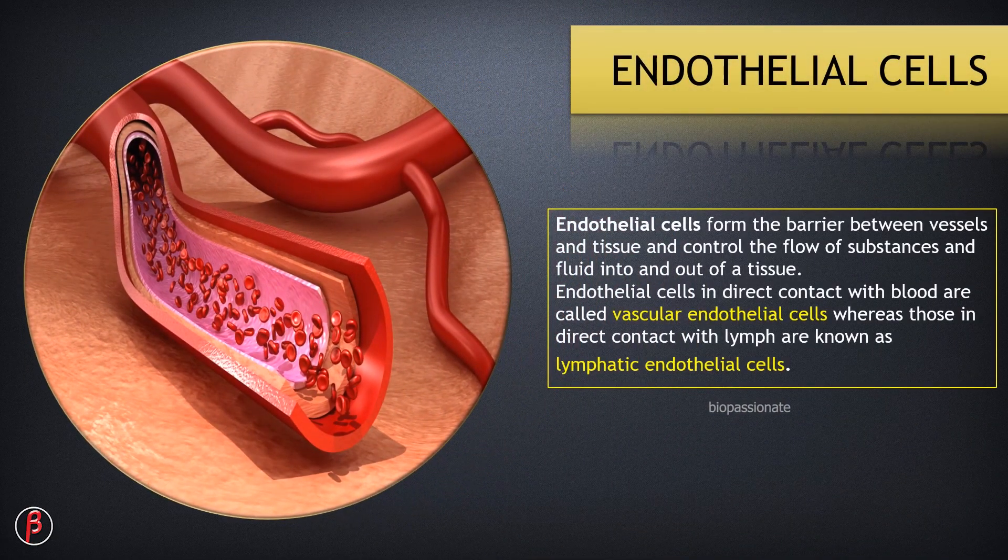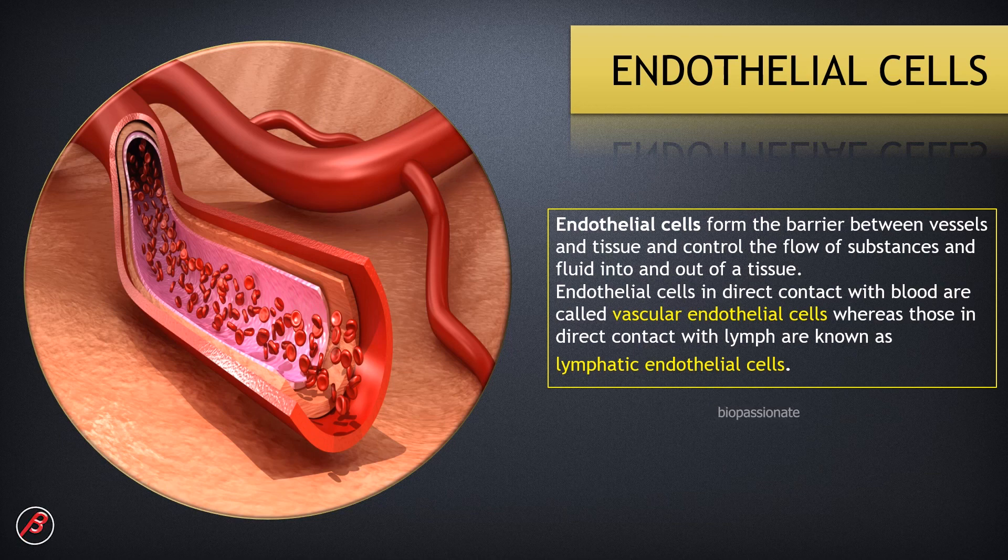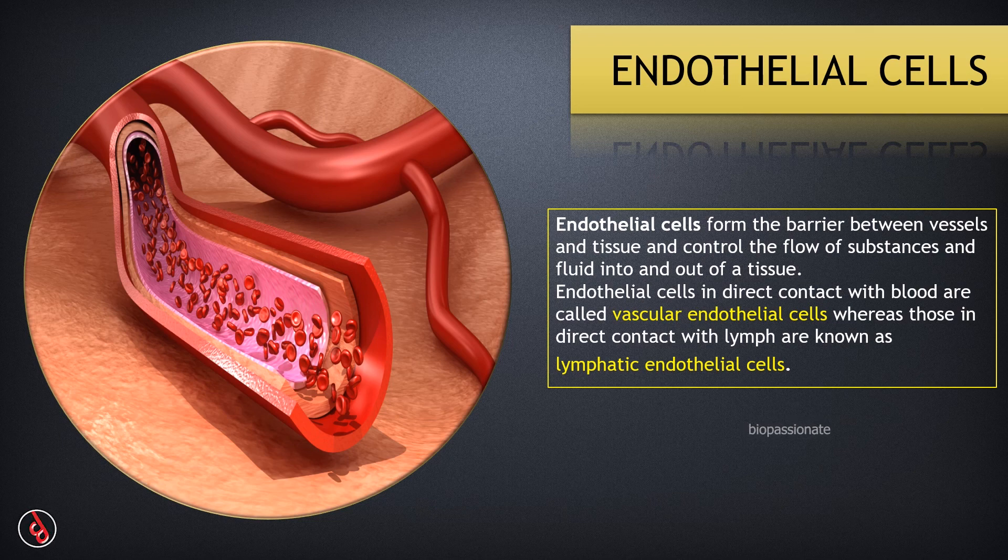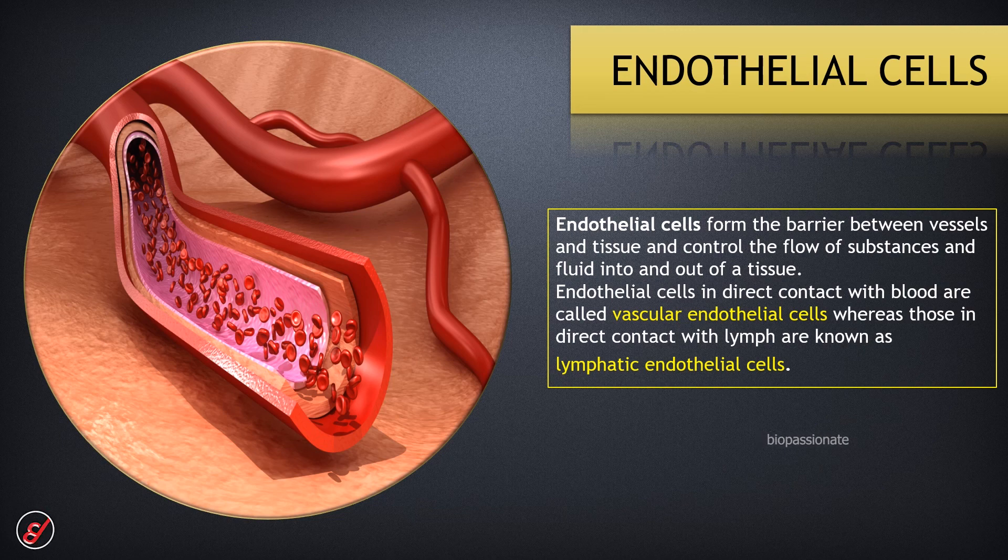Endothelial cells form the barrier between vessels and tissue and control the flow of substances and fluid into and out of a tissue. Endothelial cells in direct contact with blood are called vascular endothelial cells, whereas those in direct contact with lymph are known as lymphatic endothelial cells.